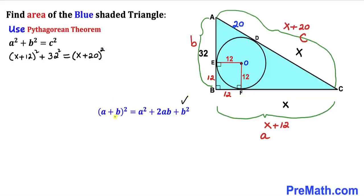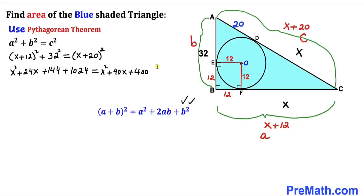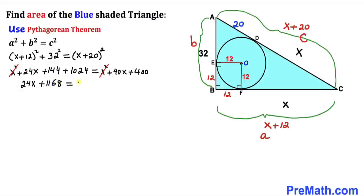Now let's recall the identity (A + B)² = A² + 2AB + B² and apply it here. So (X + 12)² expands to X² + 24X + 144, and 32² is 1024, giving us X² + 24X + 1168 on the left. On the right, (X + 20)² expands to X² + 40X + 400. The X² terms cancel, and combining like terms gives us 24X + 1168 = 40X + 400.